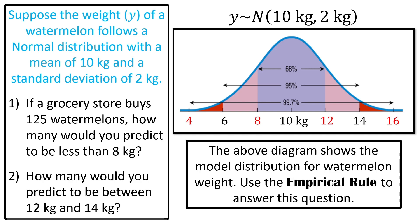This model is pictured on the right. We have a normal distribution centered at 10, and on the horizontal axis: 8, 6, and 4 on one side; 12, 14, and 16 on the other. 8 and 12 represent plus or minus one standard deviation from the mean — because the standard deviation is 2, so 10 plus 2 is 12 and 10 minus 2 is 8. The 6 and 14 represent the mean plus or minus two standard deviations. The 4 and 16, the mean plus or minus three standard deviations.